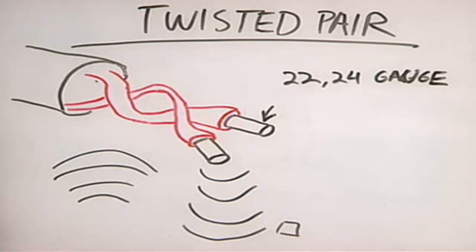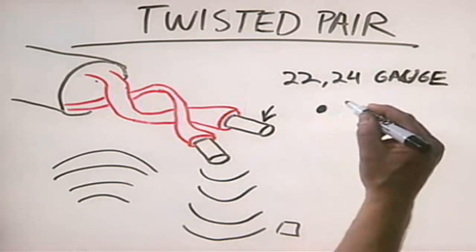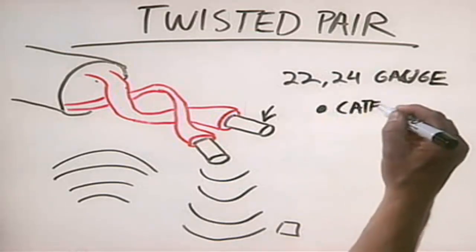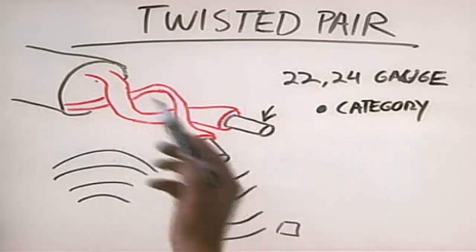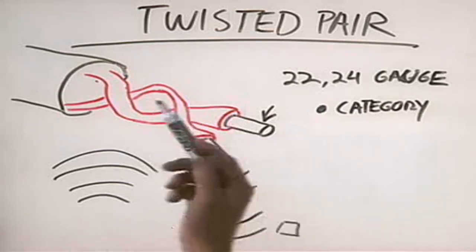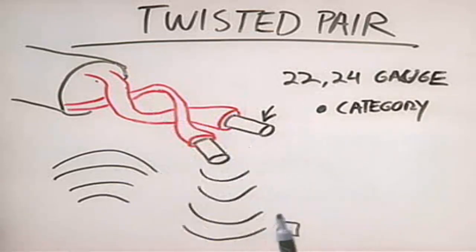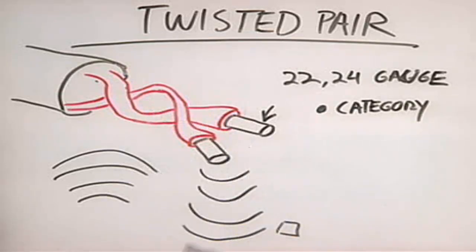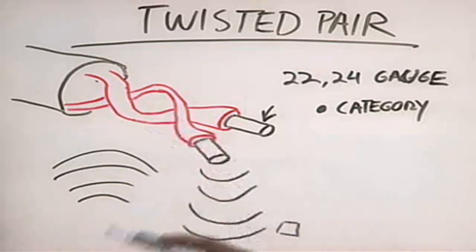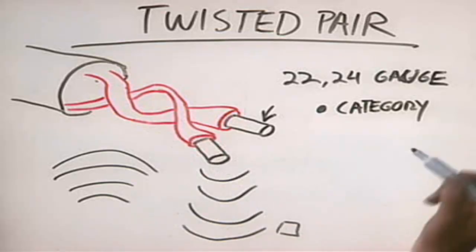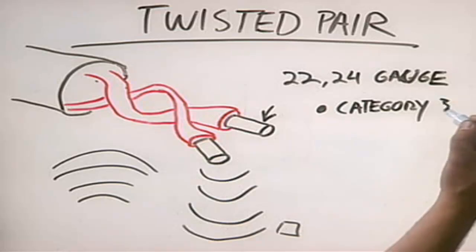There are different types of twisted pair wiring rated according to their category. The main difference between categories isn't visible — it's their electrical properties, specifically how tightly the wires are twisted together. The tighter the twist, the faster the data, and therefore the higher the quality of the cable. The first type is Category 3, commonly called CAT 3. Category 3 is an older type that can support data transfers of 10 to 16 megabits per second and isn't widely used anymore.